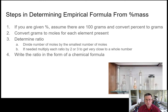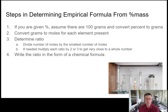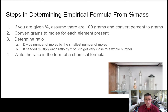Here are the four steps we're going to go through — pause the video and write these down, you're going to need to know these. First, deal with the percentage sign by converting to grams, just by pretending there are 100 grams. Second, convert grams to moles to get from mass to numbers of things. Third, determine the ratio — first divide each value by the smallest number of moles, and sometimes multiply everything by 2 or 3 to get close to a whole number. Fourth, write out the chemical formula.